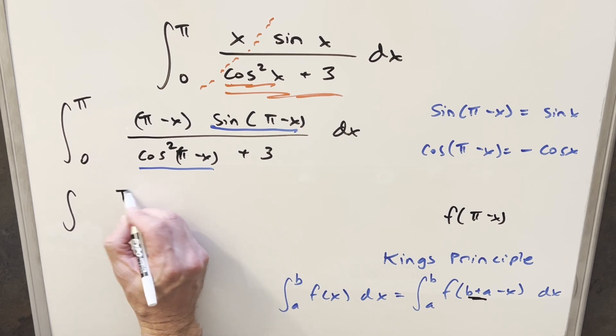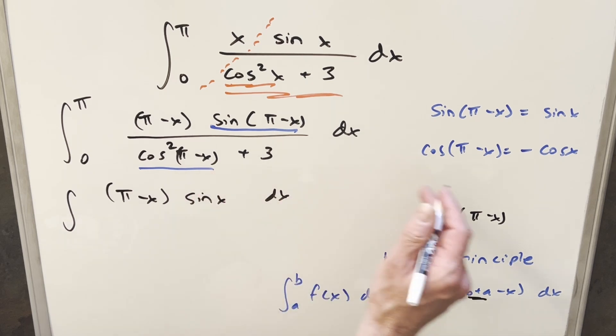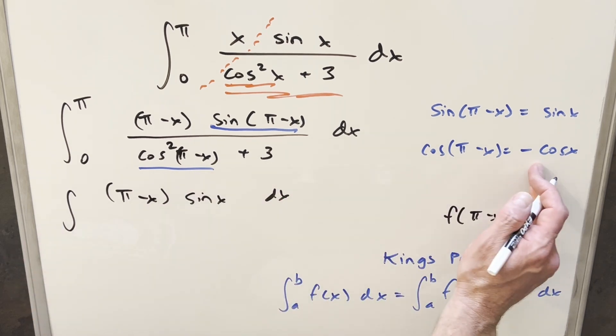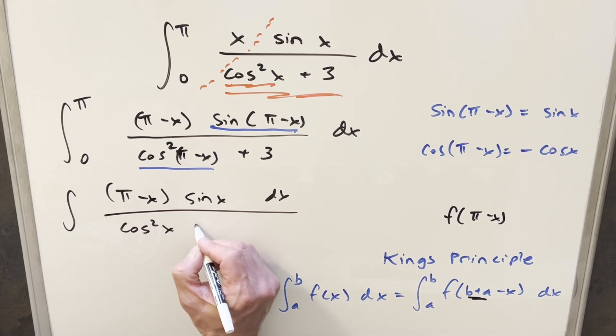So when we use this and rewrite this, what's going to happen? We have our pi minus x. This is just going to become sine x right here. After we take this and square it, this is going to become just cosine squared x plus 3.